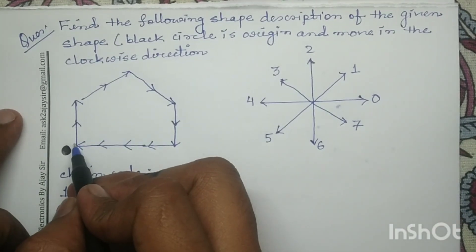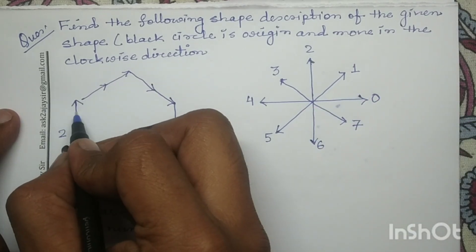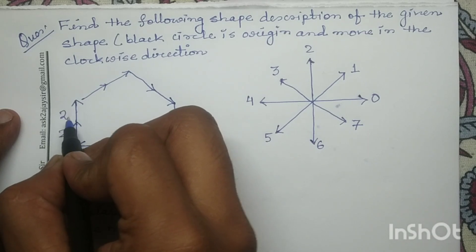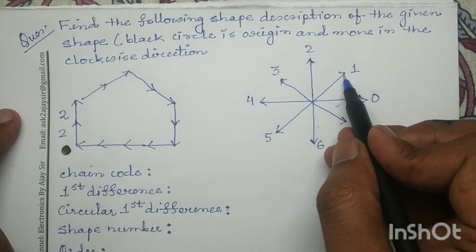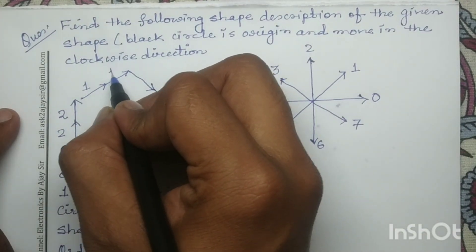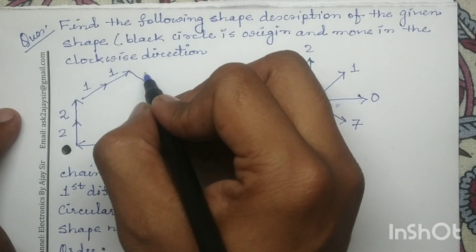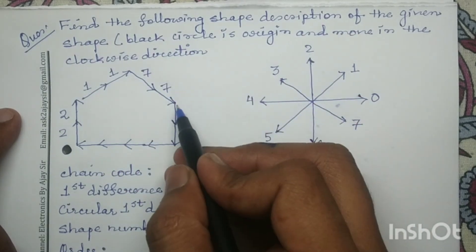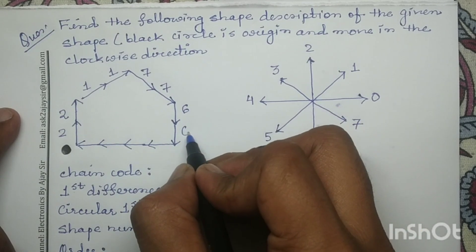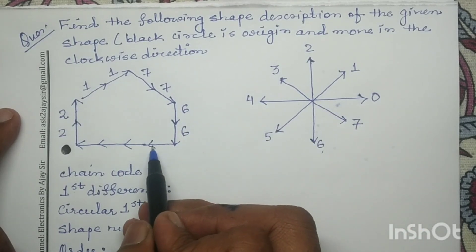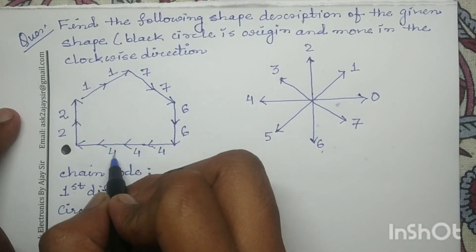In eight-directional chain code, this up arrow has the directional code 2, so I will write 2. For the next up direction arrow, I will write 2. For this inclined direction, the directional code is 1, so I will write 1 and 1. Similarly, for this inclined arrow it has the direction code 7, so I will write 7 and 7. For this down arrow the directional code is 6, so I will write 6 and 6. For this reverse arrow the directional code is 4, so I will write 4, 4, 4, and 4.